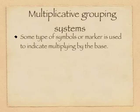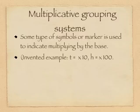There are multiplicative grouping systems. In this case, some type of symbol or marker is used to indicate multiplying by the base. Let me show you an invented example. We can use our current number system, but we can use the letter T to stand for multiply by ten, and the letter H to stand for multiply by a hundred.